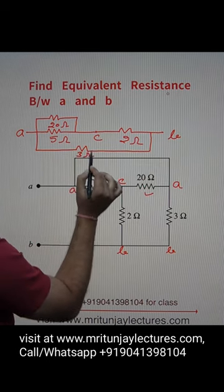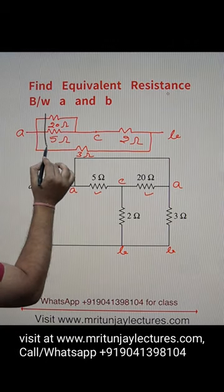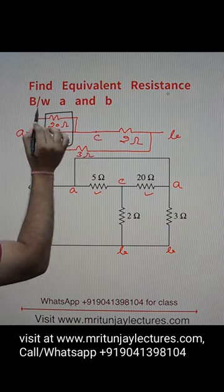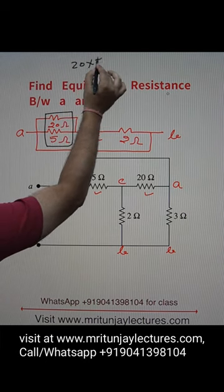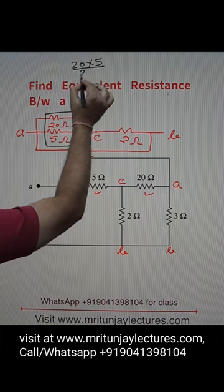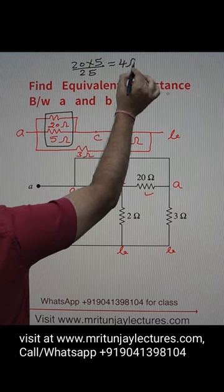Now next target: how can we determine? Look here, these two are parallel. So combination of these two: 20 into 5 divided by 5 plus 25, and that is 100 by 25, that is 4 ohm. So basically that is 4 ohm.